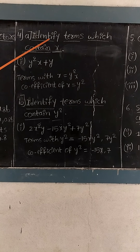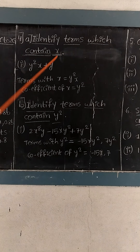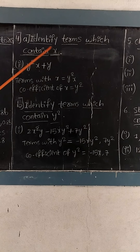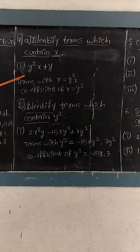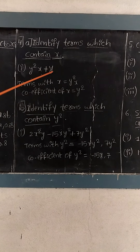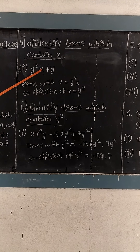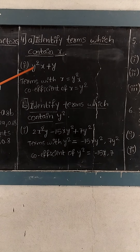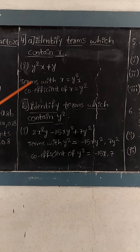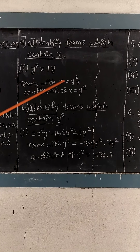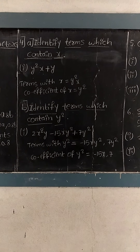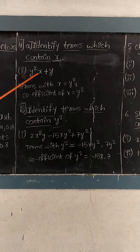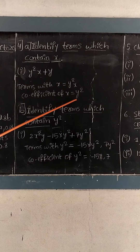The fourth question is: identify the terms which contain x and also write the coefficient of x. First question: y squared x plus y. In this expression we have two terms, but only one term contains x — that is y squared x. Therefore the term with x is y squared x, and the coefficient of x is y squared.